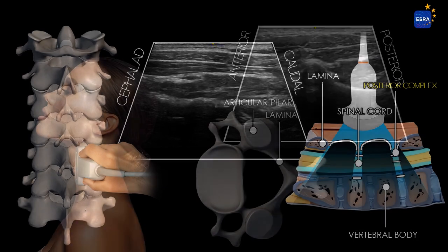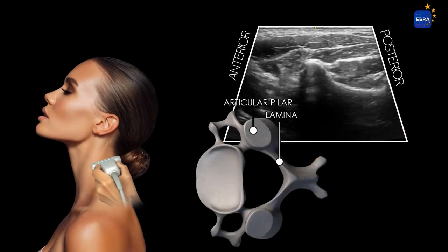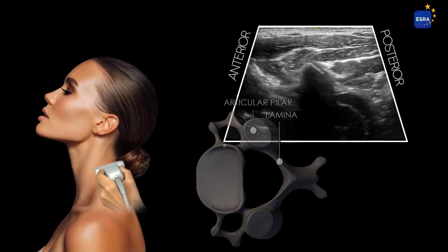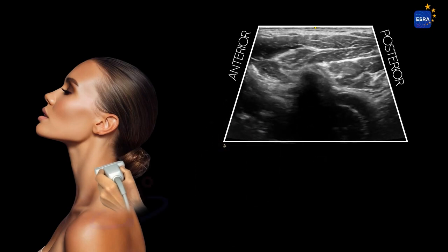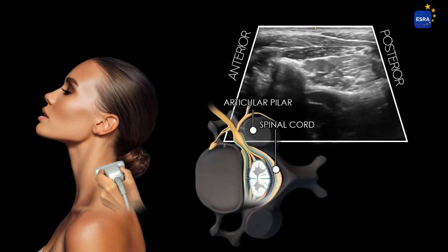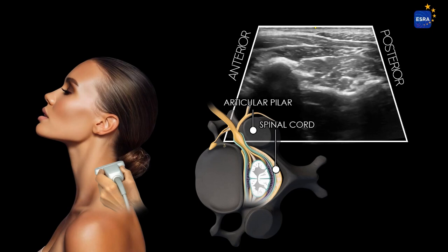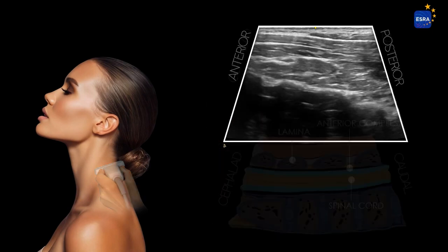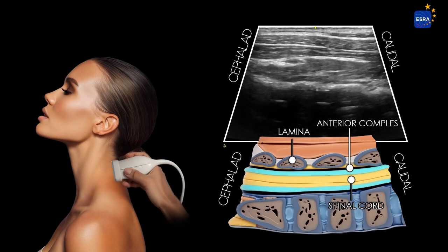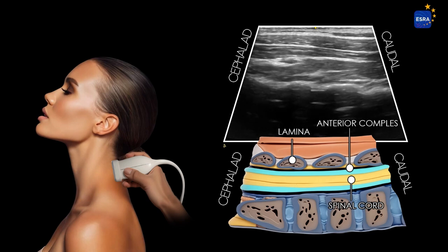Here we can observe the real-time exploration dynamics. Once the articular pillar, lamina, and spinous process are identified in the axial plane, we will slide the transducer caudally to visualize the interlaminar space and the spinal cord. At this point, we will rotate the transducer to an oblique paramedian sagittal axis where we can observe the posterior and anterior complexes between each lamina.